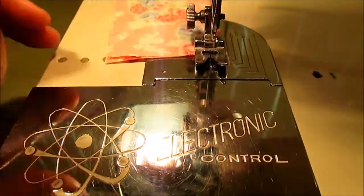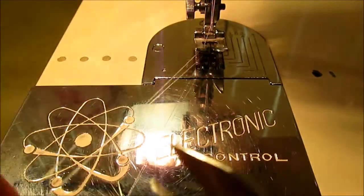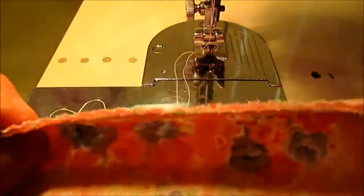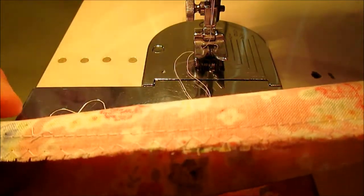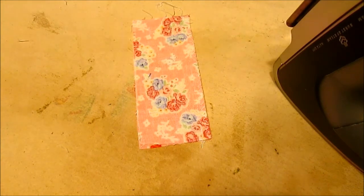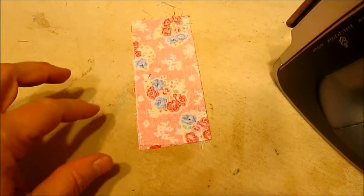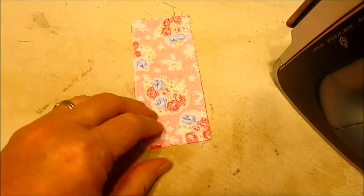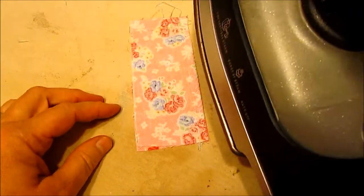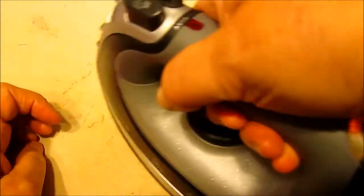Ta-da! We sewed a finished edge seam. We backstitched at both sides. It's nice and neat. Okay, so here I am over at my ironing board and my lighting over here isn't as good, so I'm sorry about that. We've just sewn our finished seam here.